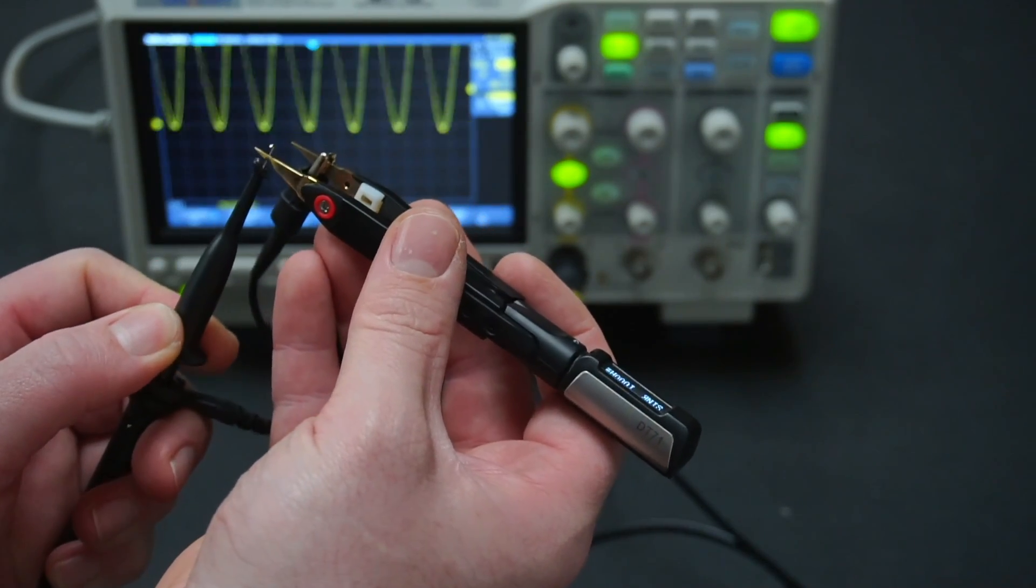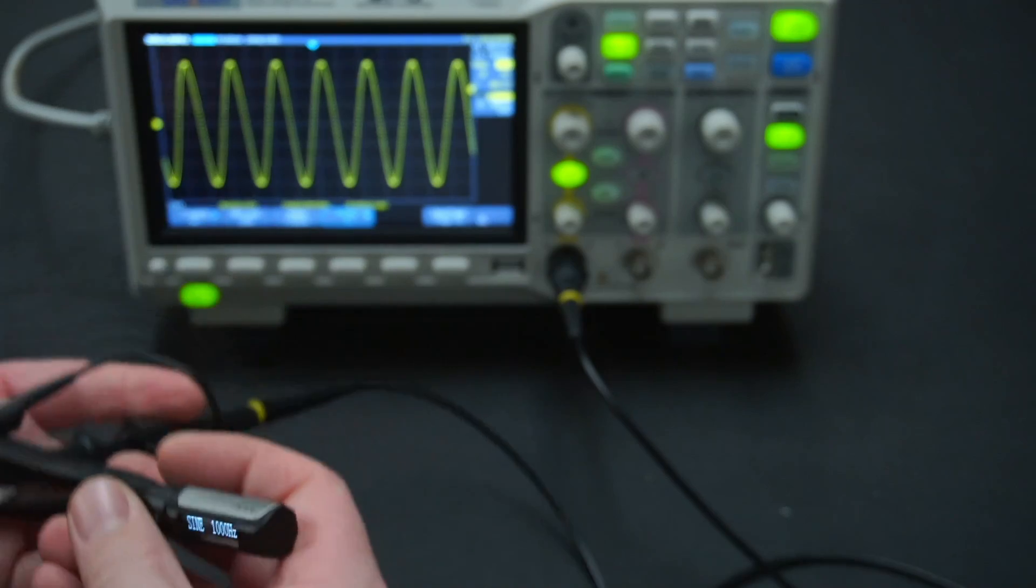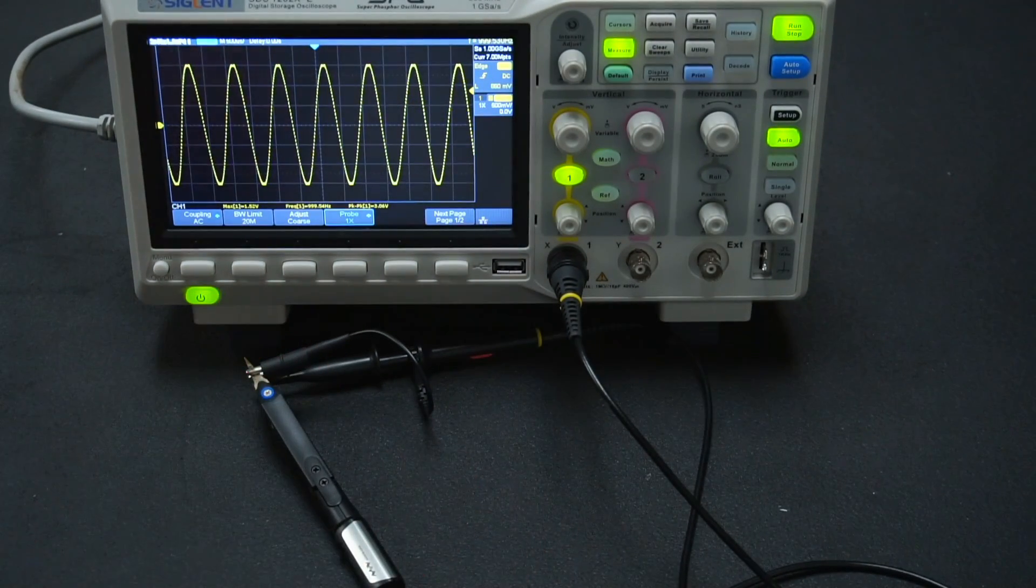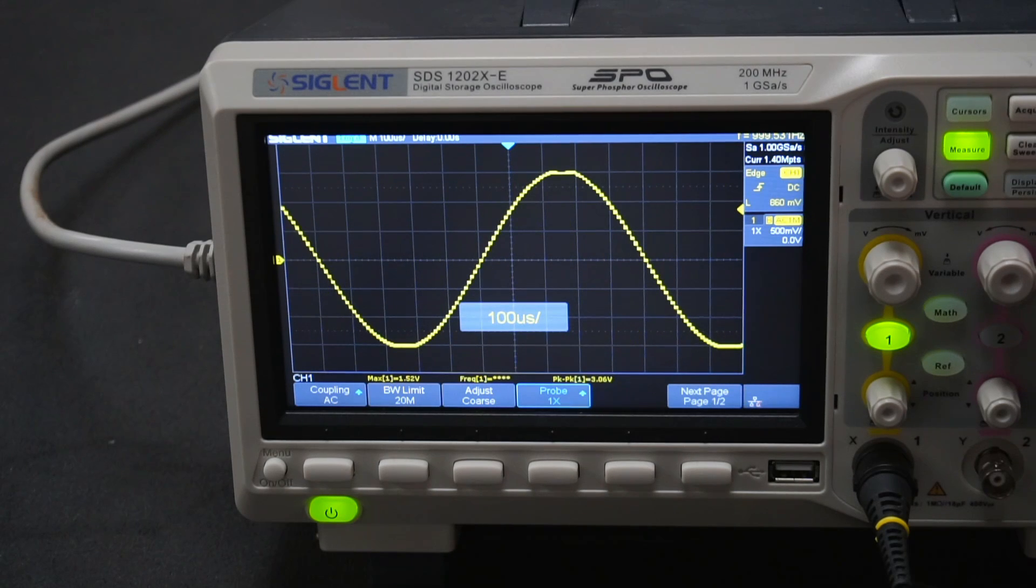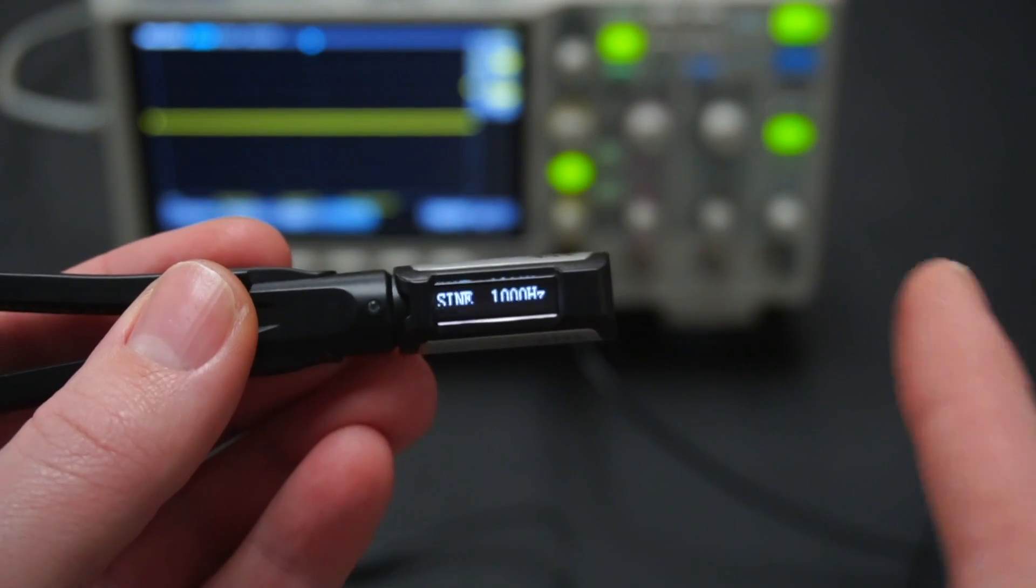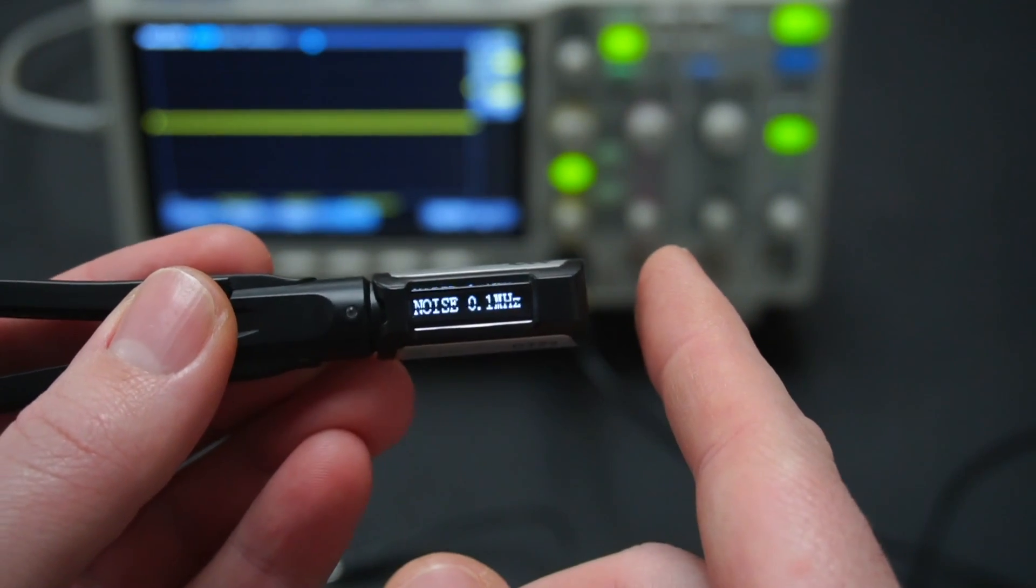It can output a sine wave between 10 Hz to 20 kHz with a peak-to-peak value of up to 3 volts. And this is what the sine wave output looks like on my scope. It can also generate noise and pulse waveforms.